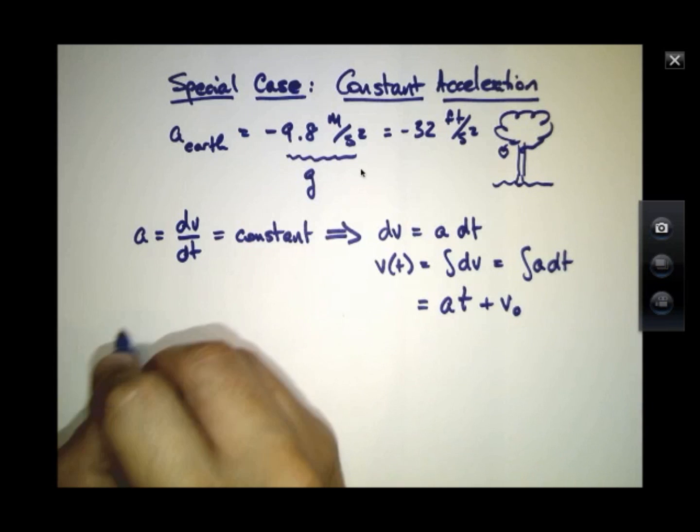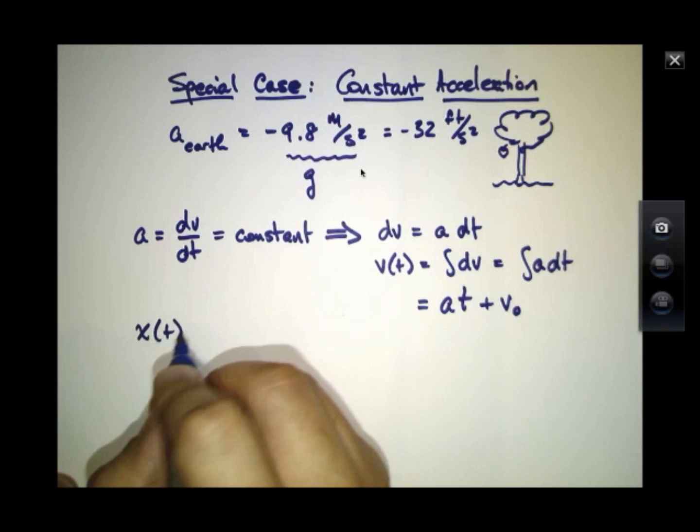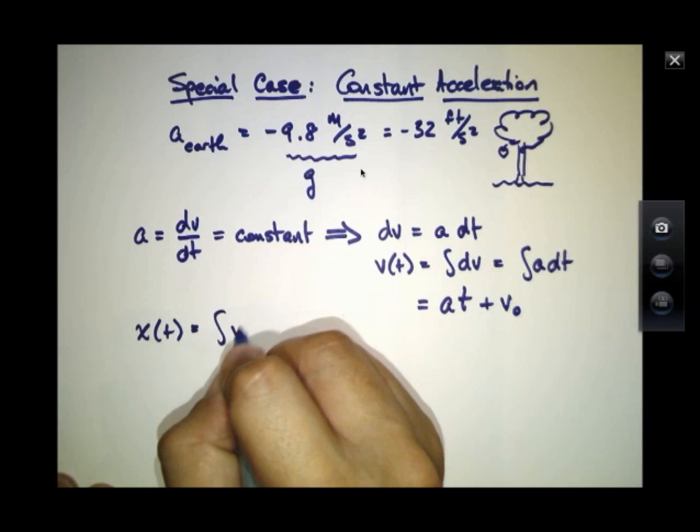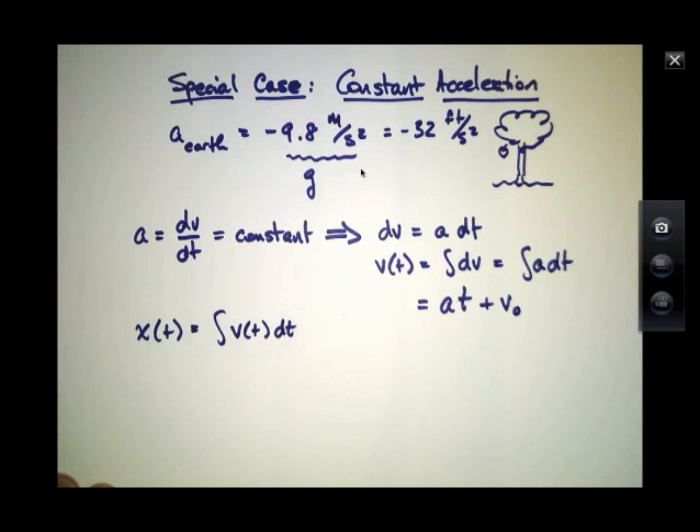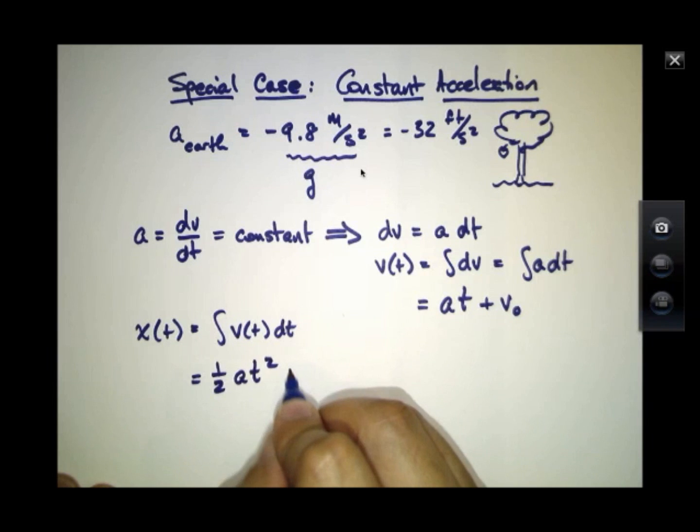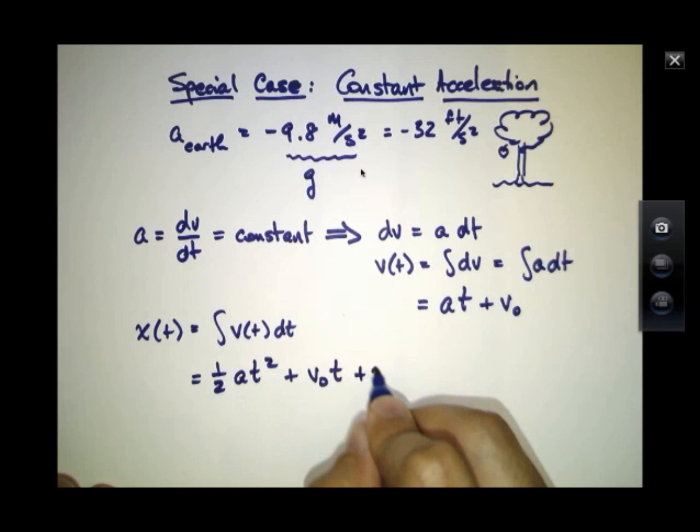It also means that the position as a function of time will equal the integral or antiderivative of v of t. And if I integrate that expression there, it becomes 1 half at squared, plus v not t, plus x not, where x not is another constant of integration.